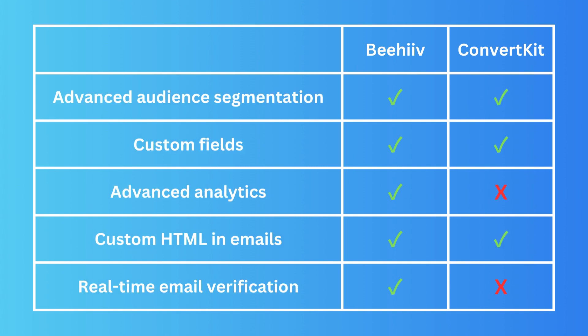Advanced audience segmentation is available in both Beehive and ConvertKit, as are custom fields — both softwares have these functions. Now, advanced analytics is really important. If you have an audience, it's important to look at the data — which emails they read, which links they click, which polls they engage with, and why. This is much better in Beehive. ConvertKit's analytics are very advanced and complex to navigate.